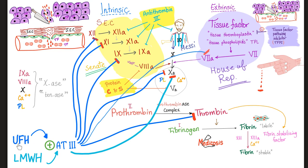With regards to the unfractionated heparin inhibiting factors 2, 7, 9, 10, thrombin, and factor 10 — do you think it will prolong the PTT? Oh yeah — it inhibited and destroyed the intrinsic pathway, so of course the PTT will be prolonged. Now, the low molecular weight heparin — do you think it will prolong the PTT? It just inhibits factor 10, which is in the common pathway, not in the intrinsic pathway. The intrinsic pathway was spared, therefore it's not going to affect the PTT.